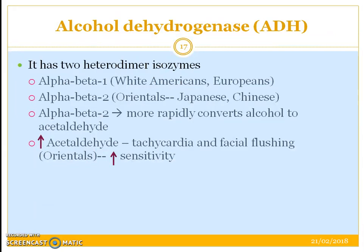Alcohol dehydrogenase enzyme has two heterodimer isozymes — alpha-beta-1, which is more predominant among white American or white European populations, whereas alpha-beta-2 is more widely seen among orientals, i.e. the Japanese or Chinese population. Alpha-beta-2 can more rapidly convert alcohol to acetaldehyde, and increased acetaldehyde concentration is a characteristic feature for tachycardia (increased heart rate) and facial flushing. This means the Japanese or Chinese population have increased sensitivity to this increase in acetaldehyde concentration, possibly because of alpha-beta-2.